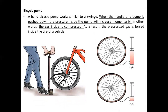Let's talk about the next example: the bicycle pump, which we use to fill a tire. The handle of the bicycle pump works similarly to a syringe. When the handle of the pump is pushed downward, the volume decreases, the pressure is increased, and the air inside is compressed. So, this is another example of Boyle's Law.